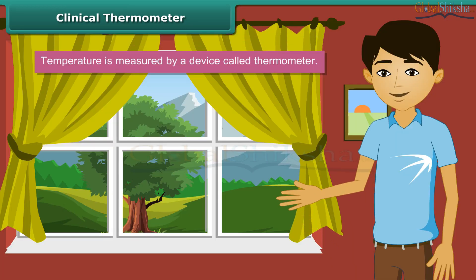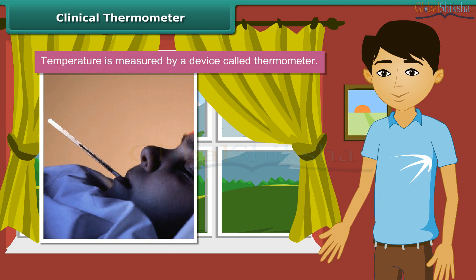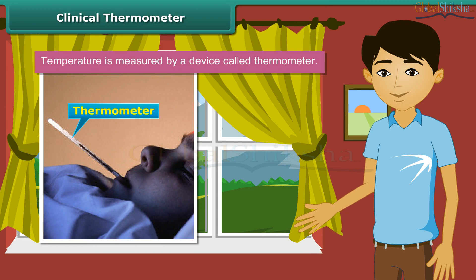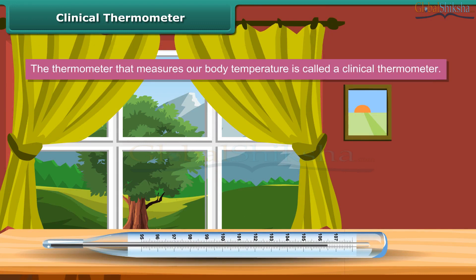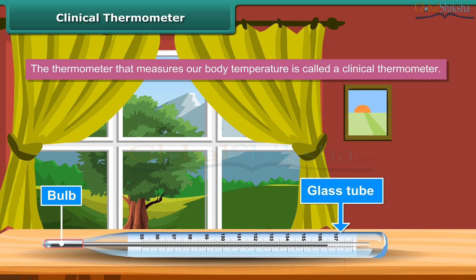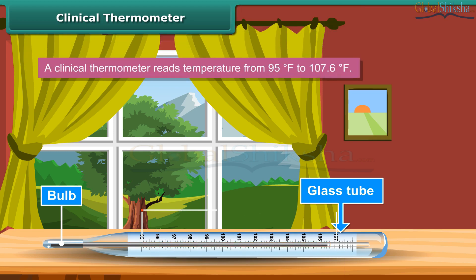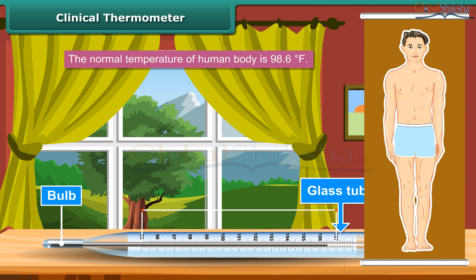Now that we have learnt about temperature, let us look at the device used to measure temperature — it is called a thermometer. The most common use of a thermometer is to measure our body temperature; such a thermometer is called a clinical thermometer. A clinical thermometer consists of a long narrow uniform glass tube with a bulb at one end filled with mercury. A clinical thermometer reads temperature from 95°F to 107.6°F. The normal temperature of the human body is 98.6°F. The clinical thermometer is also known as a doctor's thermometer.